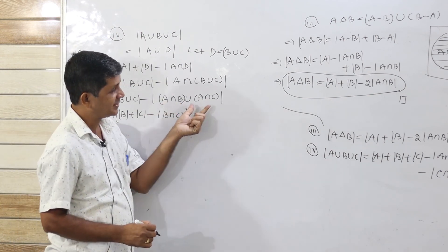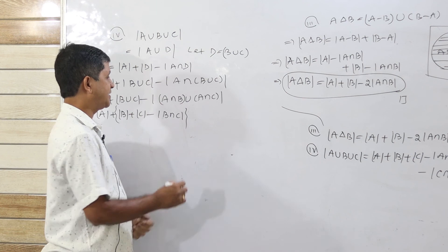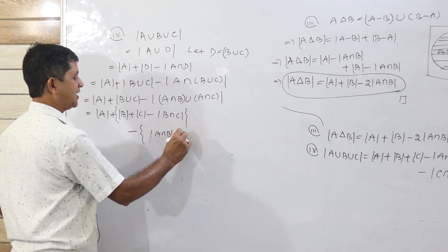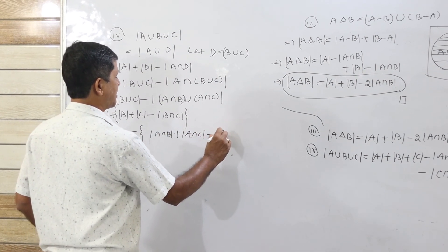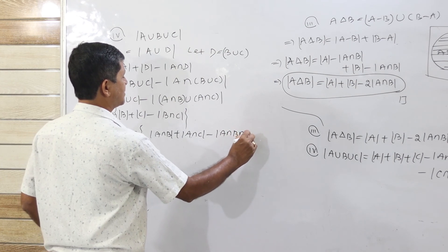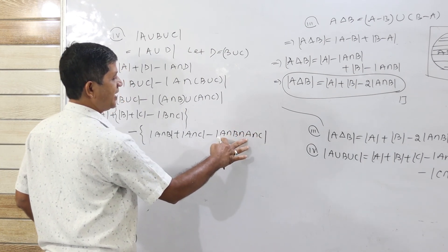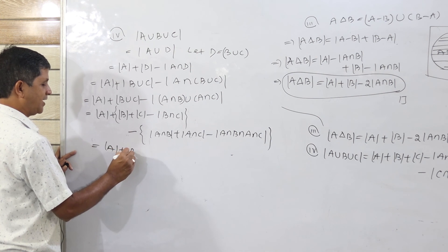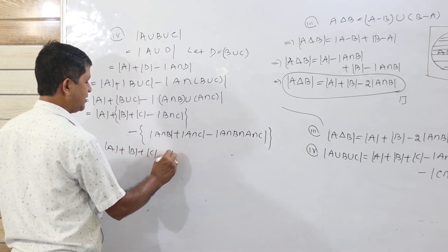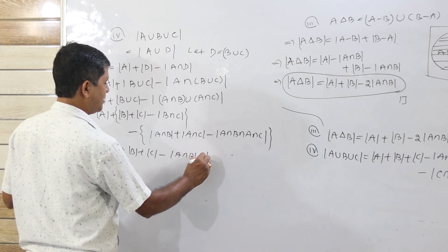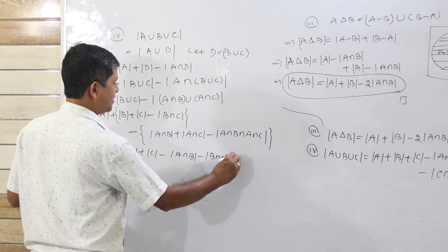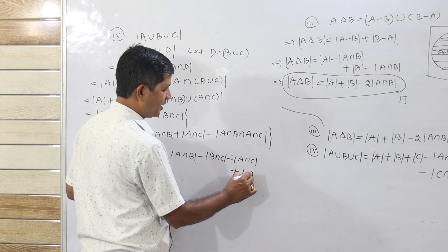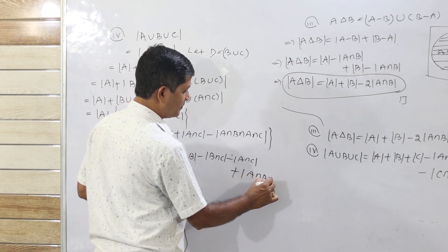For the intersection term, A intersection (B union C) equals (A intersection B) union (A intersection C). Applying the first result again gives cardinality of A intersection B plus cardinality of A intersection C minus cardinality of A intersection B intersection C. Since A intersection A equals A, this simplifies correctly.